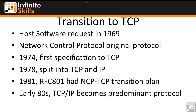At that point they were still using NCP primarily on the ARPANET. In 1981 you can see RFC 801, the NCP-TCP transition plan. There was actually a formal plan to transition between NCP — the Network Control Protocol — and TCP, the Transmission Control Protocol, or TCP/IP.